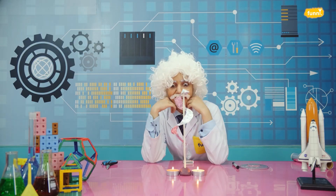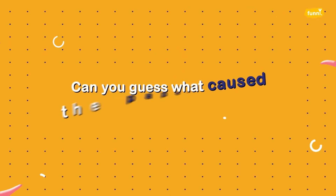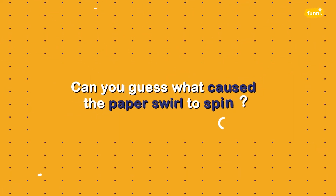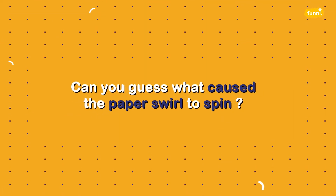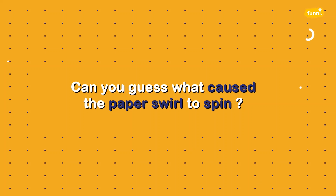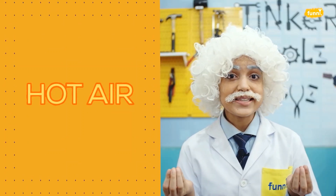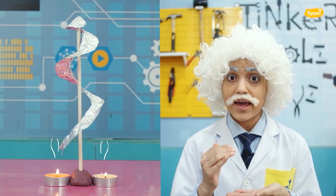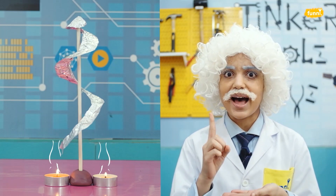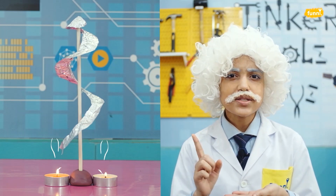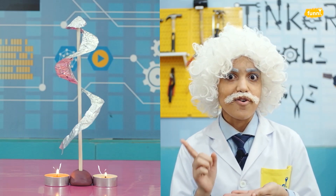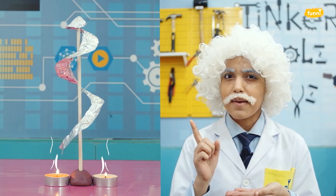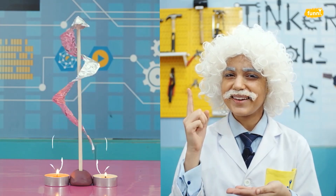How's this happening? Can you guess what caused the paper swirl to spin? Simple — the hot air! By lighting a candle, the air above the flame becomes hot and it rises up. This hot air rises up and makes the paper swirl spin.